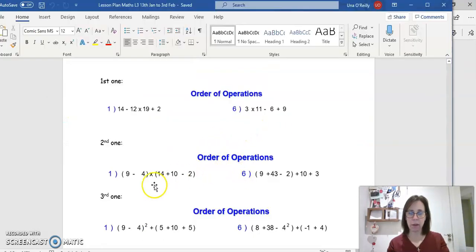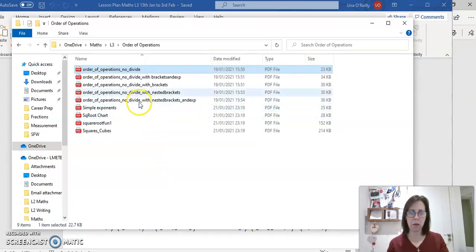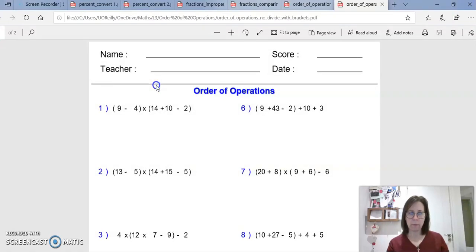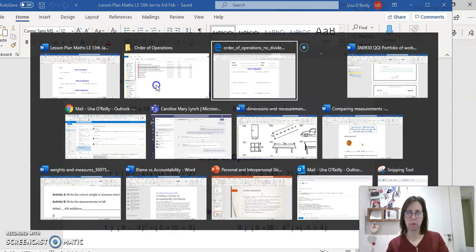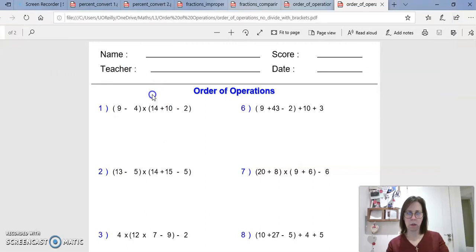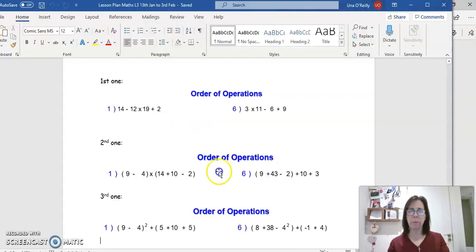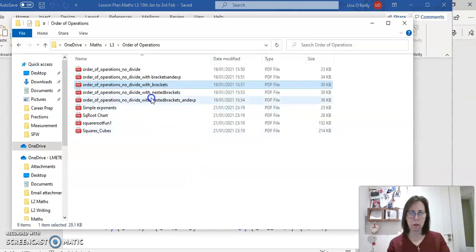The first one is order of operations. On the top of the sheet it looks like this: 14 minus 12 multiply by 19 plus 2. So how do you work that out? There are probably 10 on each page, and the answers, as I said, are there. So if you're struggling to figure out what to do, have a look at the answers that will help you, but remember it's BIDMAS. We've mentioned it in the last few weeks. That's what guides you as to which part of these expressions you work out first.